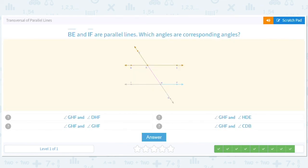And which angles are corresponding angles? Okay. So GHF. Its corresponding angle would be this thing here, which would be EDH or HDE. GHF and HDE. So it would be this. And the other ones like CDE. No. GHF, you don't say it's corresponding to itself. GHF DHF. Yeah. Okay.